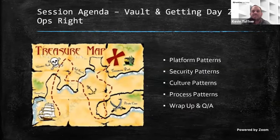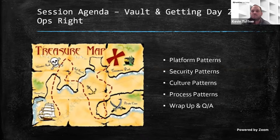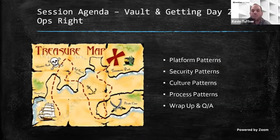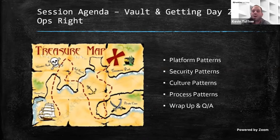So what are we actually going to talk about today? This is a pretty big theme I've seen: you deploy Vault, you get a couple of use cases going, but how do you streamline day two operations? The goal of the session — unfortunately it's 30 minutes — but we could spend hours talking about day two ops. There are four big pillars: how do we enable day two success from a platform perspective, a security perspective, and how do we enable culture within the organization and streamline processes.